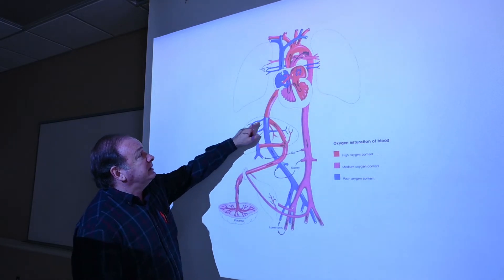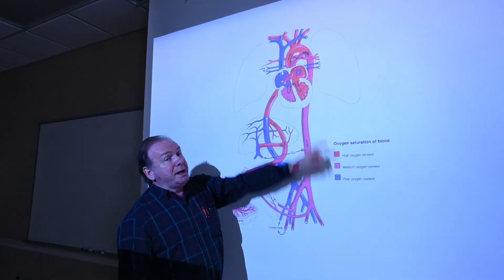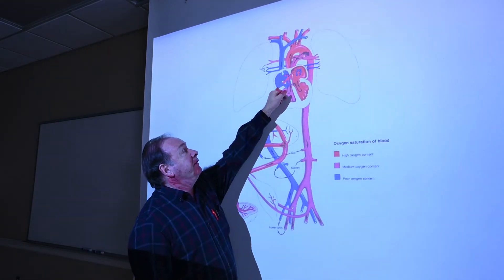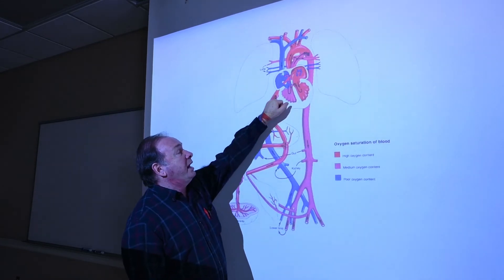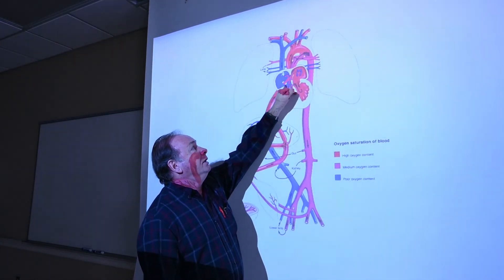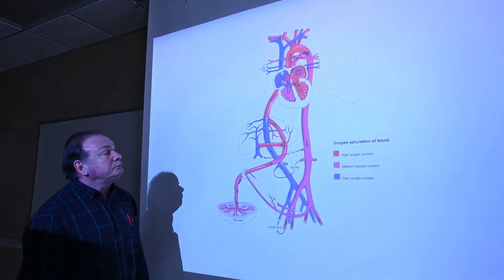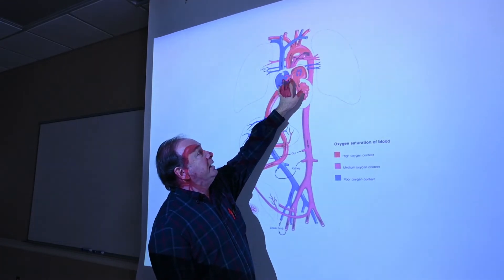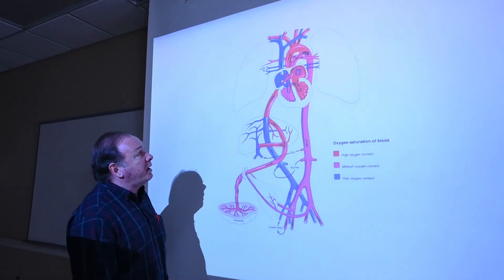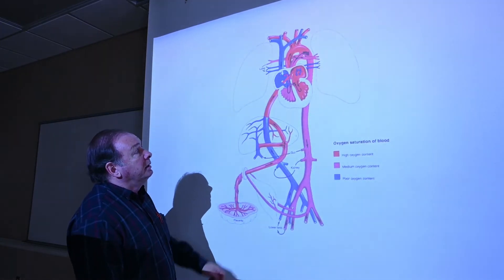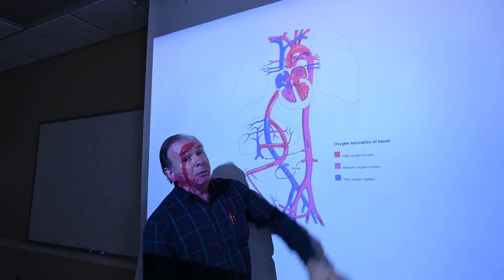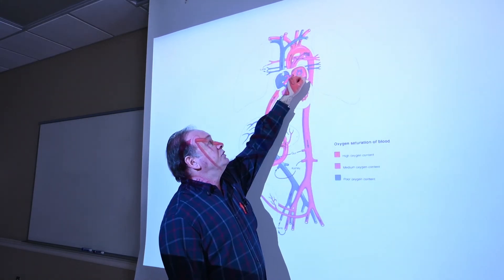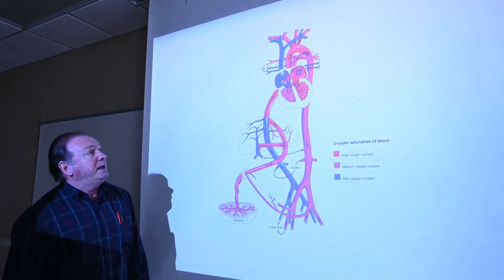The third location where mixing occurs is in the right atrial chamber. The inferior vena cava blood is slightly higher in oxygen than superior vena cava blood, and they mix here. The fourth location is between the right atrium and left atrium through the foramen ovale. Blood coming to the left atrium also arrives from the lungs via the pulmonary veins, which is deoxygenated blood.